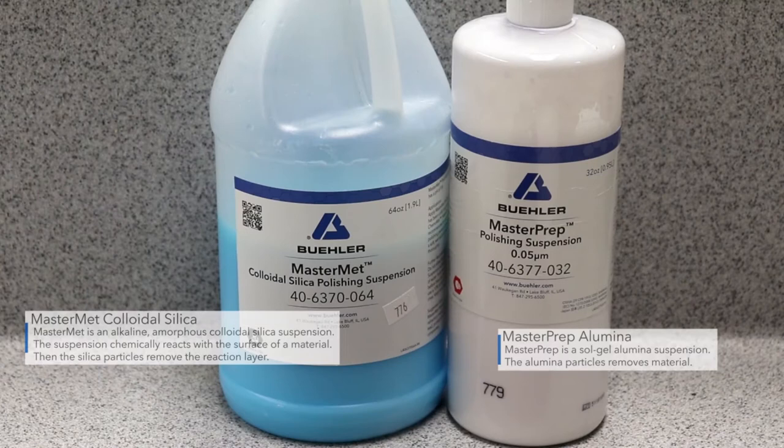The type of material being polished will determine which final polishing suspension is best. Mastermet is an alkaline amorphous colloidal silica suspension. The suspension chemically reacts to the surface of the sample and then silica particles remove the reaction layer. Masterprop is a sol-gel alumina suspension. The alumina particles mechanically remove material.